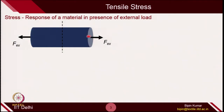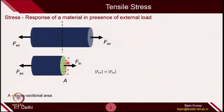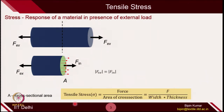When you apply any load to a material — for example a cylindrical specimen — and apply load from the edges, the material will try to resist, because the natural state of material is to remain in its original position. With the help of force you are actually extending the material, so some internal resistance develops inside the material. This internal resistance is nothing but stress. In simple terms, we define stress as force per unit cross-sectional area.